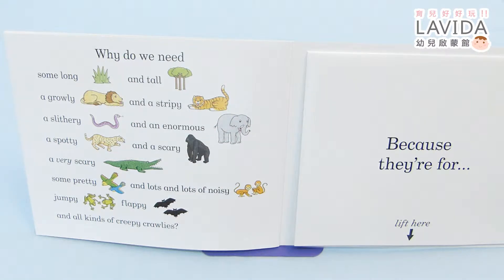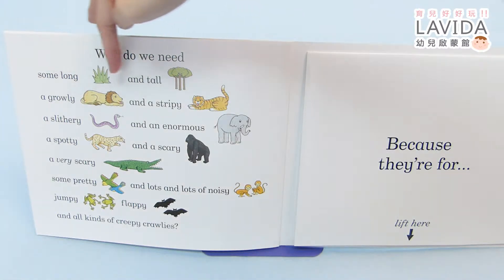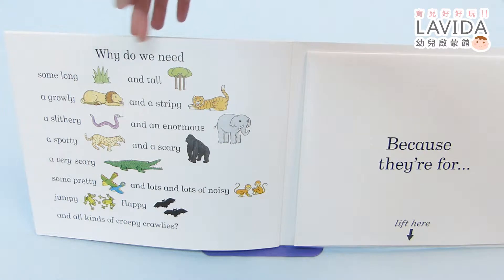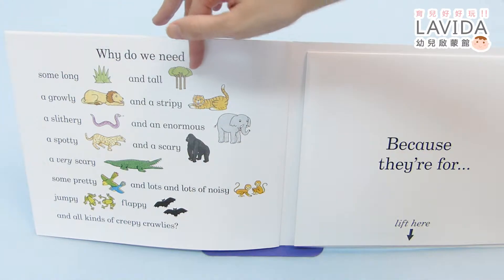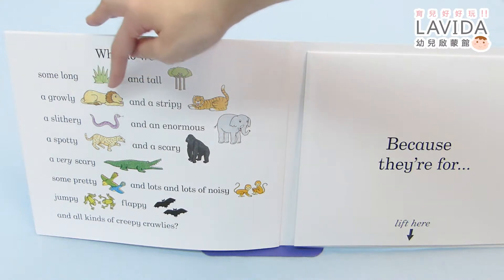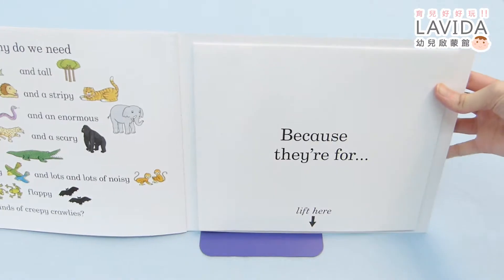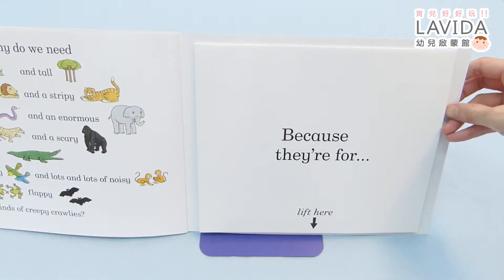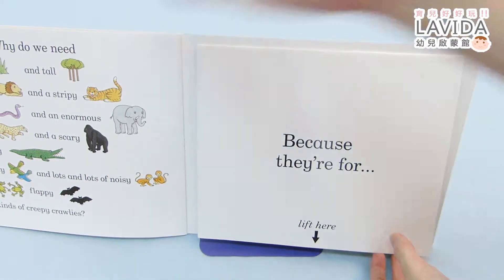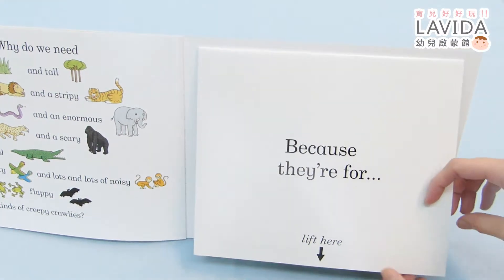所以就会知道这个动物要怎么样来形容它。那在这里呢，介绍了很多很多的丛林动物之后，最后会再帮你复习一次，说我们为什么需要这些东西呢？那当然都是前面提到的。那这个图像式的设计也可以让小朋友，他在前面已经学会了那个单字，他在这边就可以很大声念出来：Why do we need some long grass and tall trees? A growling lion and a stripy tiger?